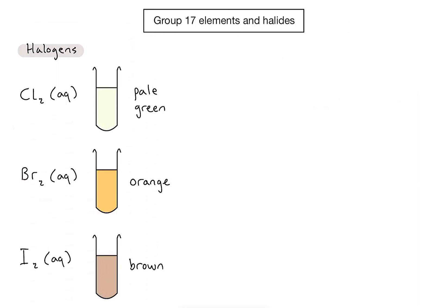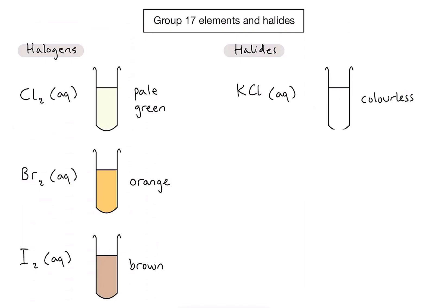We're going to be reacting those solutions with solutions containing halides. In this video we're going to have a look at the potassium halides, which means ionic compounds containing a positive potassium ion and a negative ion of a group 17 element. For example, potassium chloride solution is colourless and contains the positive potassium ion bonded to a negative chloride ion. In solution, the potassium ions and chloride ions float around independently. When writing ionic equations, we pretty much ignore the positive potassium ions because they don't take part in the reaction.